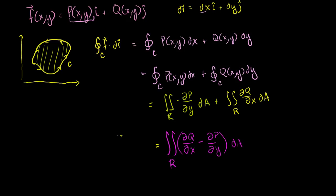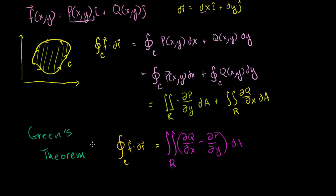The closed line integral of F dot dr is equal to the double integral over the region of (∂Q/∂x minus ∂P/∂y) dA. To remember it: the function associated with the i component — we take its partial with respect to y and negate it; the function associated with the j component — we take its partial with respect to x. This result is Green's theorem — a neat way to relate a line integral of a vector field to a double integral over a region.